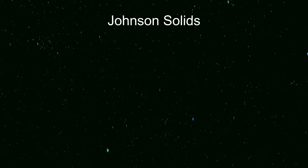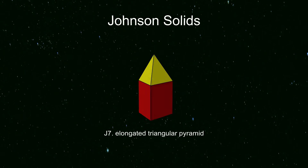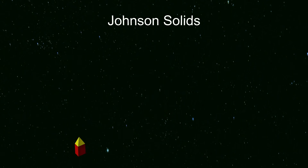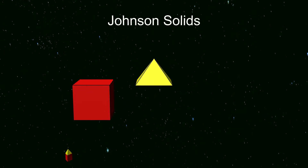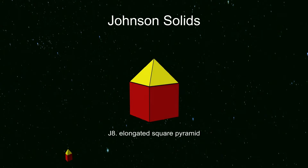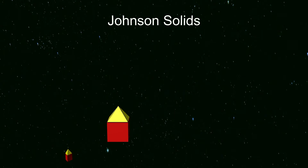We now look at extending the pyramids by adding other shapes. We include the triangular pyramid amongst these, although it is not itself a Johnson solid, being a Platonic tetrahedron. We can add a prism to the triangular pyramid to make an elongated triangular pyramid, and similarly for the square pyramid and pentagonal pyramid.